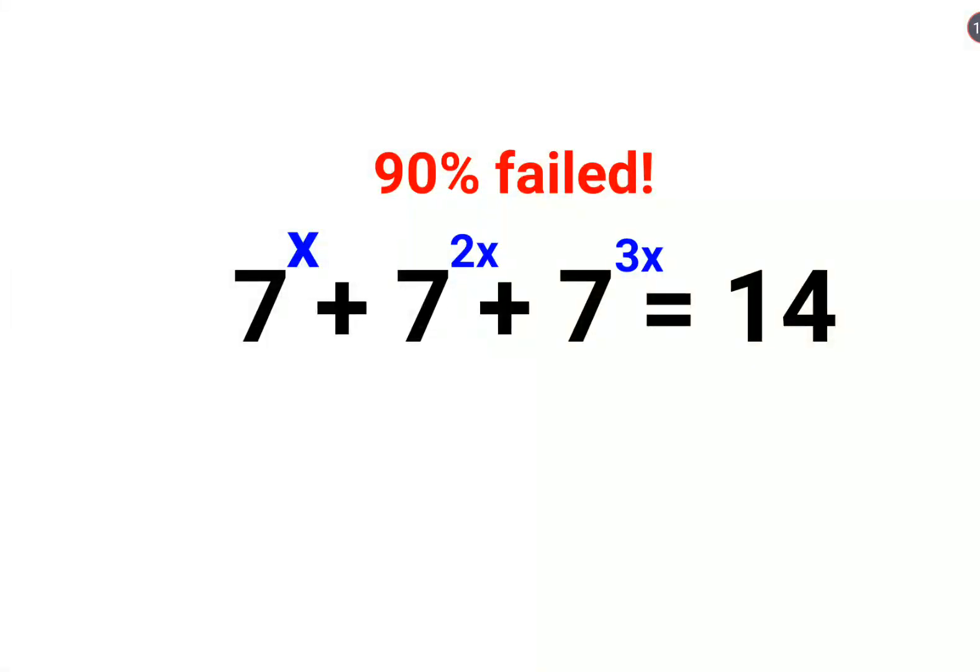Welcome everyone. Today we are going to solve a very nice analysis problem which is 7 raised to x plus 7 raised to 2x plus 7 raised to 3x equals to 14. Now what do you do in this kind of sum?